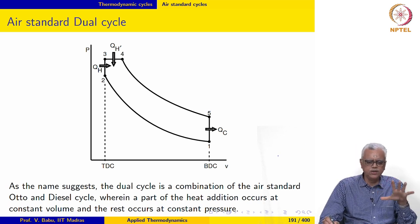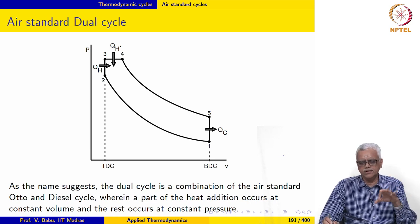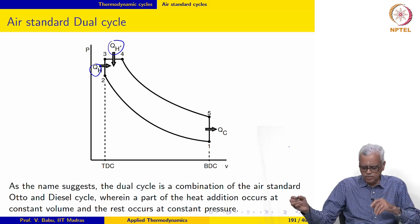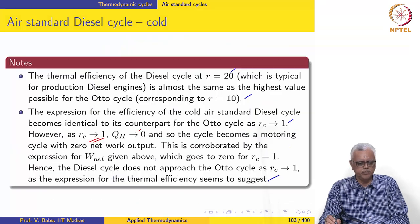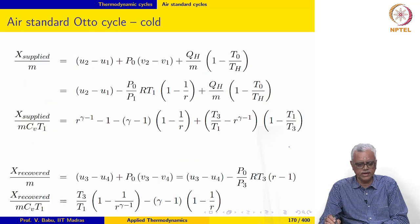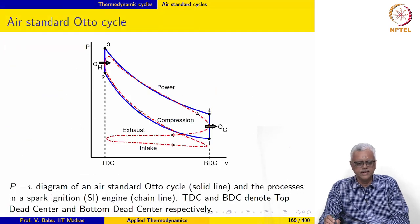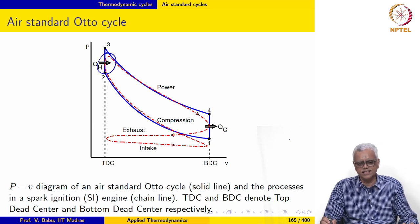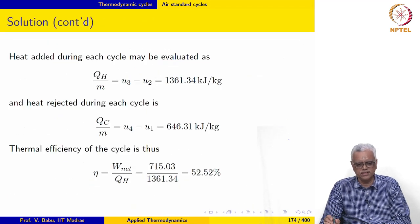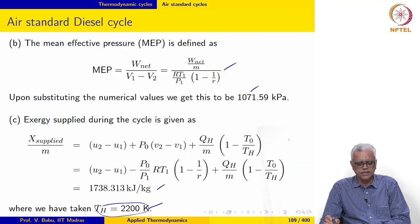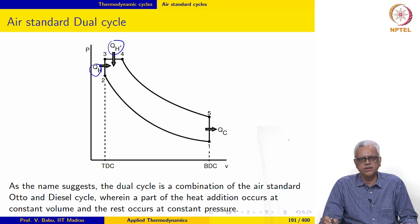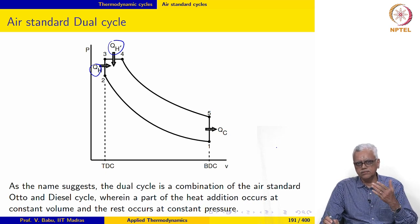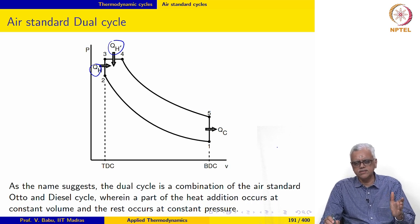Now, the air standard dual cycle is a combination of the Otto cycle and the diesel cycle where part of the heat release takes place at constant volume, part at constant pressure. The real Otto cycle is probably better represented by the dual cycle than the Otto cycle itself. You can see here that the real Otto cycle, shown using a chain line, is probably better represented as a dual cycle. But convention dictates that we use Otto cycle. It is possible to carry out a similar analysis for the dual cycle. We will not do that here. I leave that to you to look at it in the textbook and work out some examples involving the dual cycle, but it is relatively straightforward.